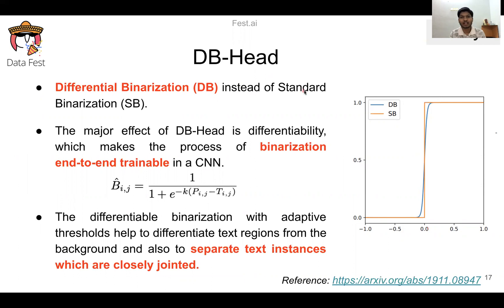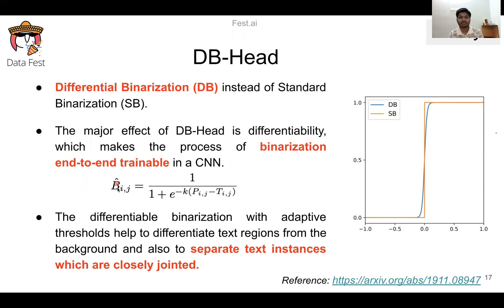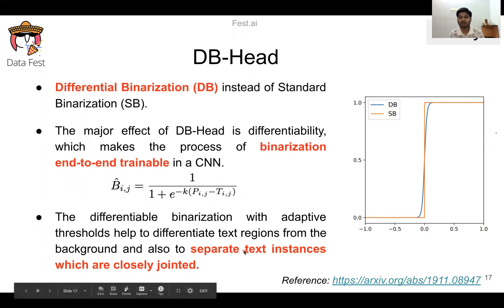We use the DB head — Differential Binarization head. Instead of standard binarization, which has only two values (zero and one), differential binarization uses all intermediate values in an effective manner. The first major benefit of the DB head is differentiability, which makes the binarization process end-to-end trainable in a CNN. Differential binarization with adaptive thresholding helps differentiate text regions from background and also separates text instances that are closely joined.